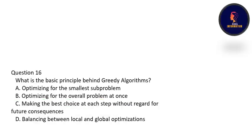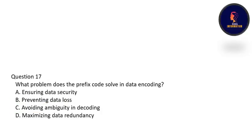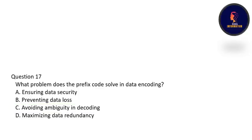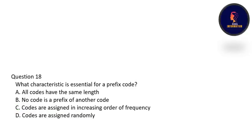What is the basic principle behind the greedy algorithm? The basic principle is to make the best choice at each step without regard to future consequences — option C is correct. What problem does prefix code solve in data encoding? Prefix code avoids ambiguity in decoding — option C is correct. What characteristic is essential for a prefix code? No code is a prefix of another code — option B is correct, and this is why it avoids ambiguity in decoding.